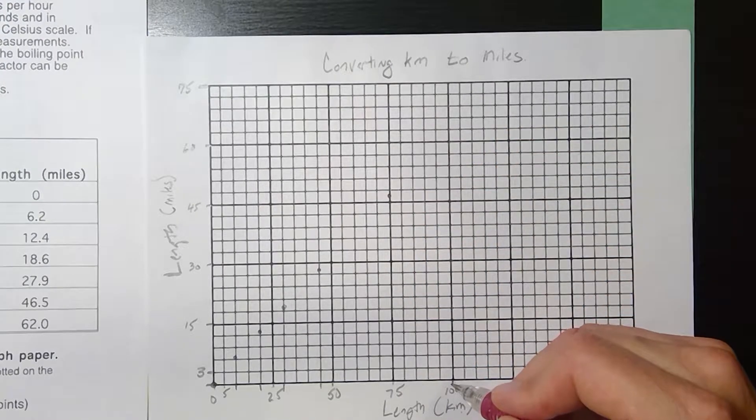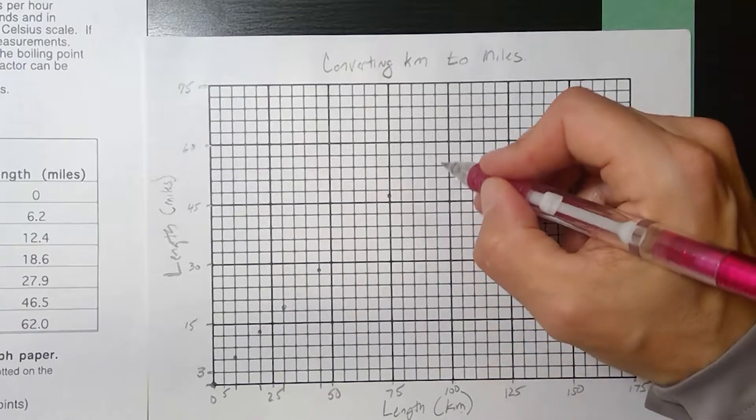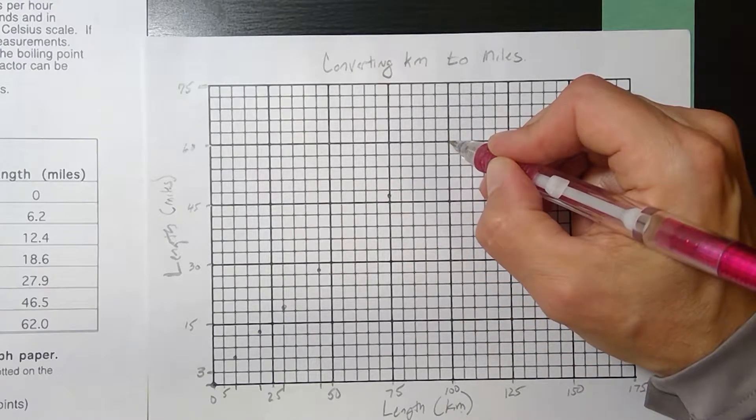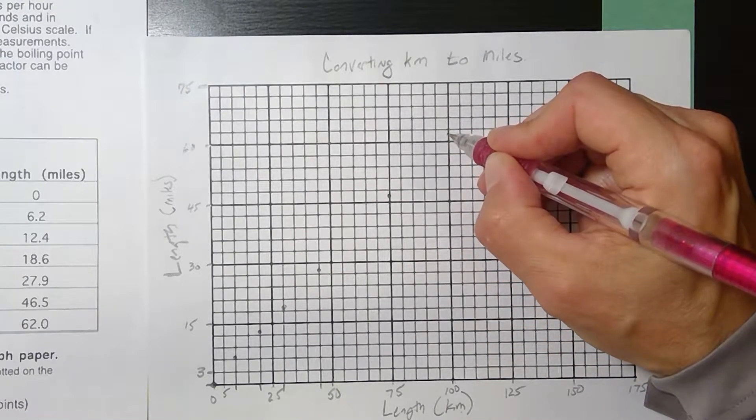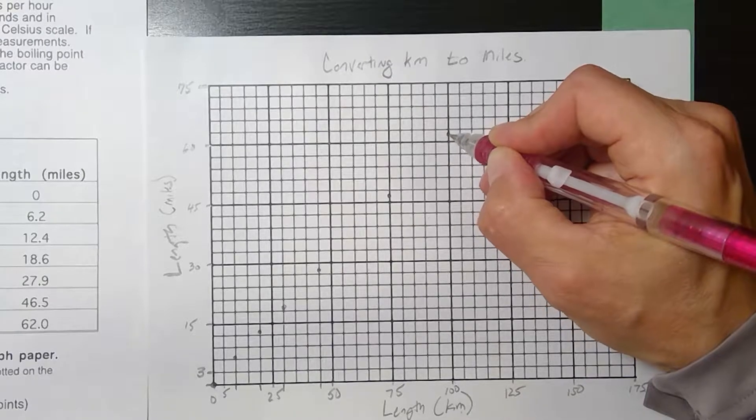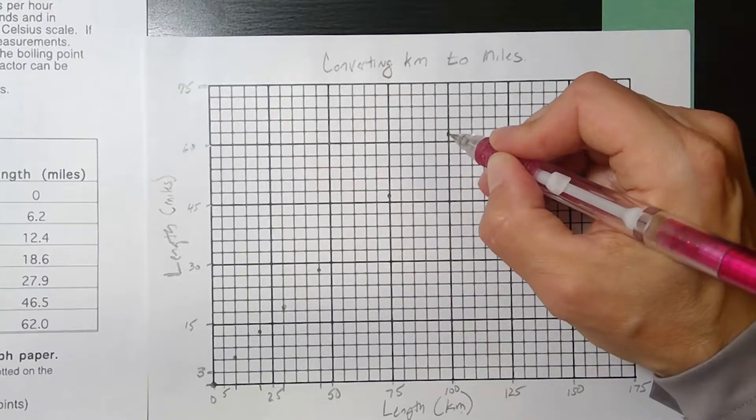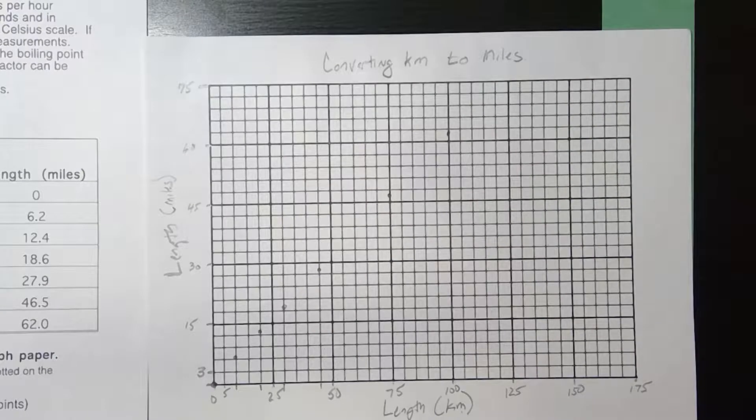And finally 100 should be 62. This is 60. That's 63. So 62 is going to be two-thirds of the way up.